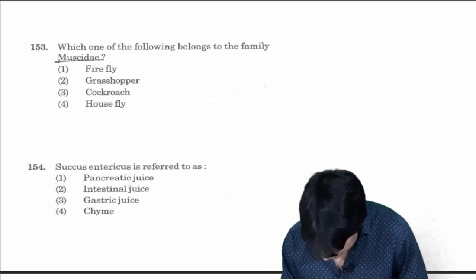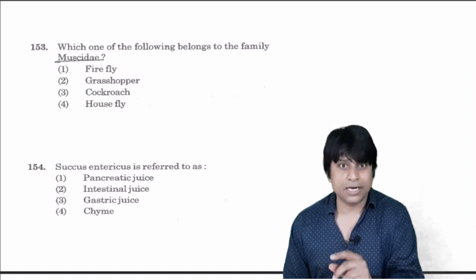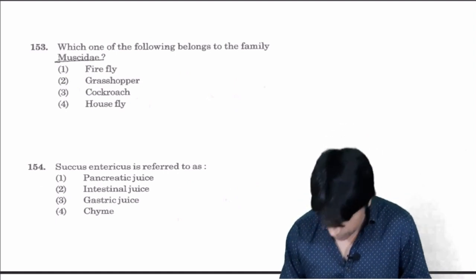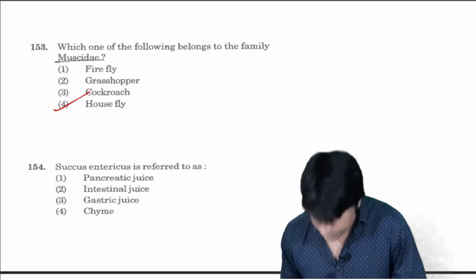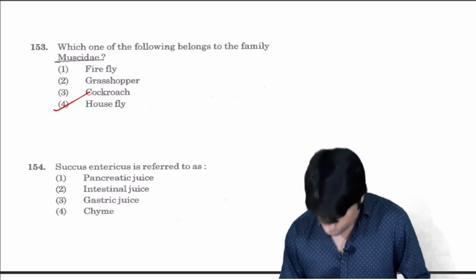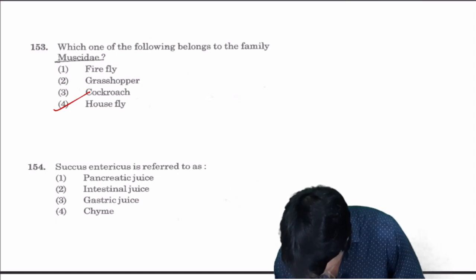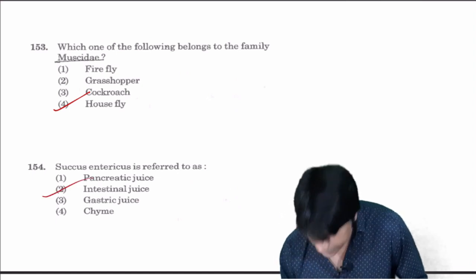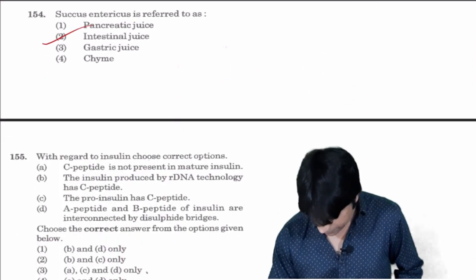Next question: Which of the following belongs to the family Muscidae? Musca domestica is housefly, so answer is four. Succus entericus is referred to as intestinal juice. The intestinal juice is also known as succus entericus.